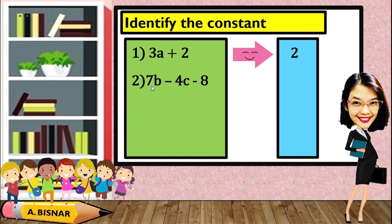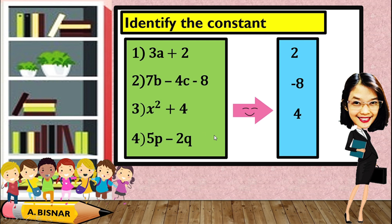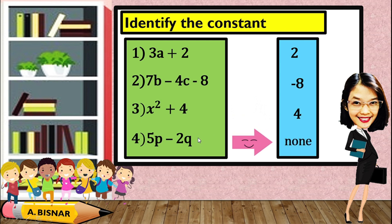Another: 7b minus 4c minus 8. The constant here is negative 8, because it has a fixed value with no variable. Another: x squared plus 4 — the constant is 4. And for the last one, 5p minus 2q — the answer is none. There is no constant in this algebraic expression because there are variables present, which means these two terms are not fixed.